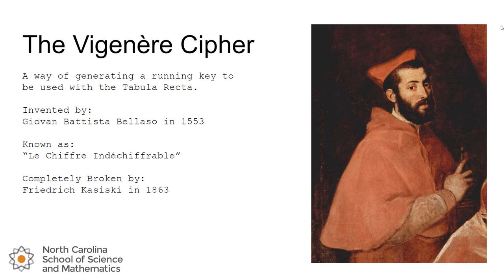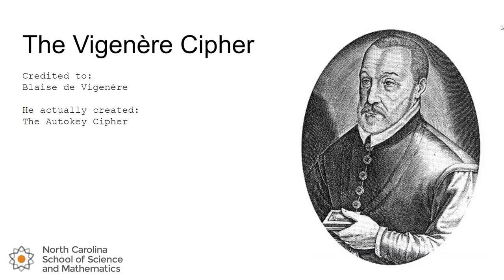You'll notice we keep calling it the Vigenère Cipher even though it was invented by somebody else. This is Blaise de Vigenère. He actually did not create the Vigenère Cipher, but it had been misattributed to him quite some time ago and took on his name despite him not coming up with it. He created the Auto Key Cipher, which is a different polyalphabetic cipher that's very similar to the Vigenère Cipher. We'll see how that plays into this in a future lesson.